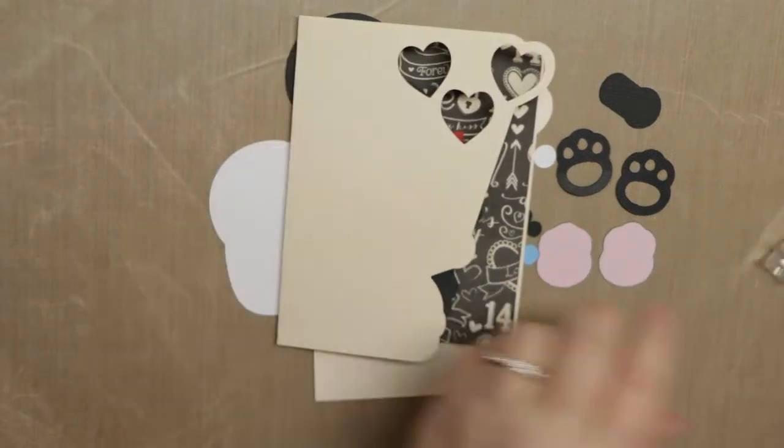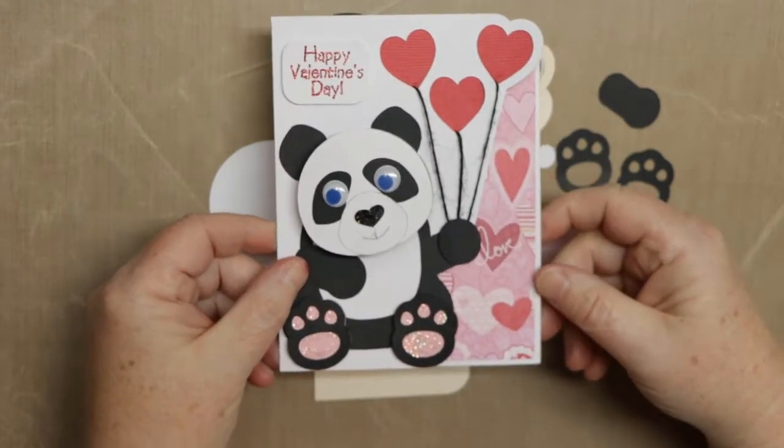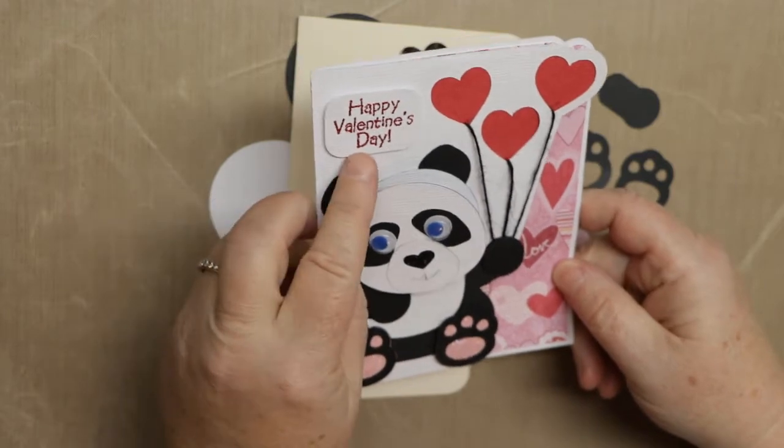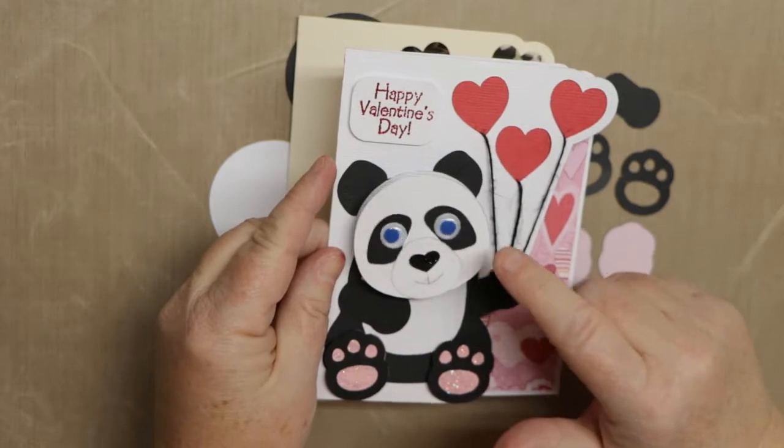We're going to make a version of this card. This one was the actual stamp version. I'm going to show you how to do this. This is an Action Wobble one.